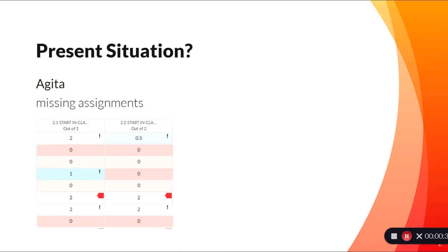My present situation at the time we started this process was experiencing a bit of agita about opening up the Canvas Gradebook and seeing so much red and so many zeros that I had entered. Not only does this show students aren't progressing, but then I'm worried — was there something on my end? Are assignments or instructions not clear? Is the student okay? Do they need something? I had no idea.